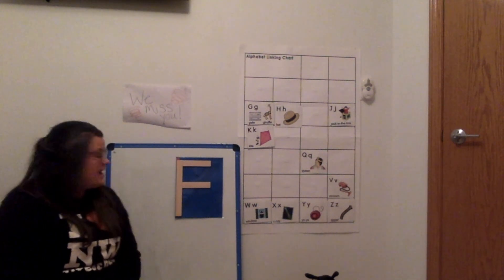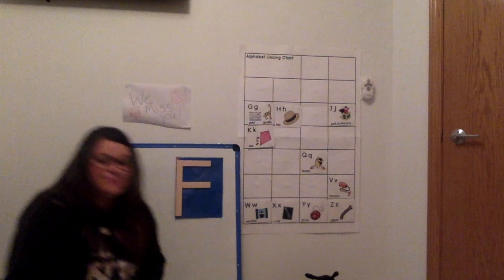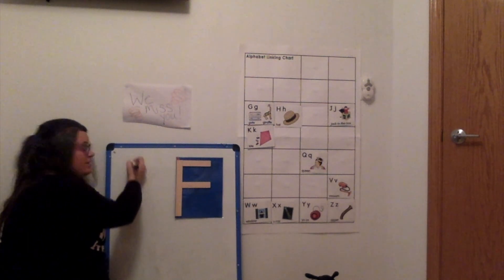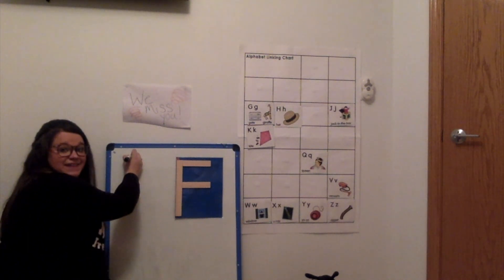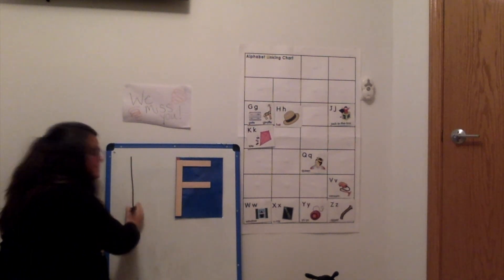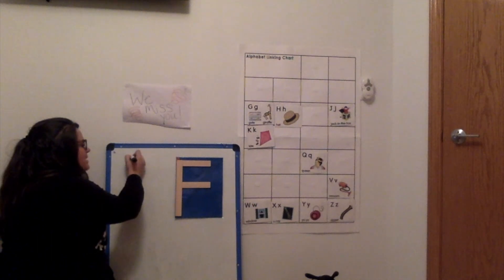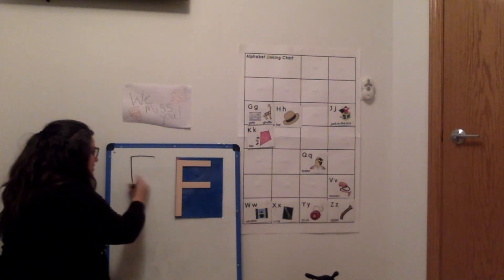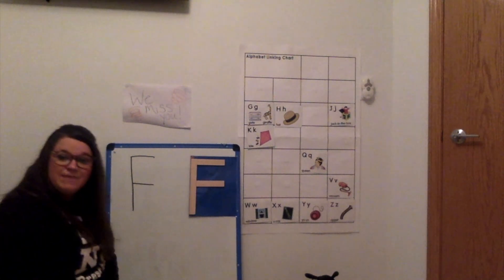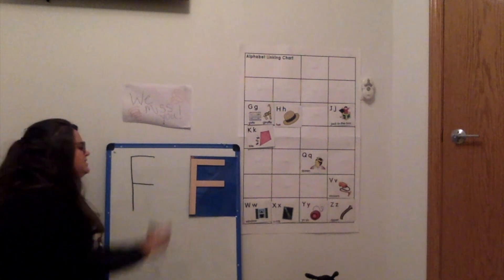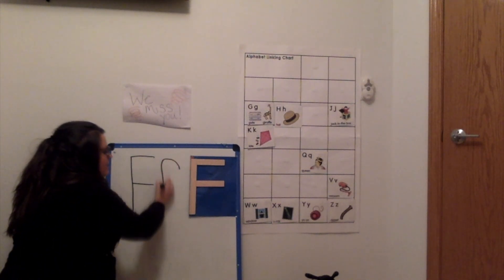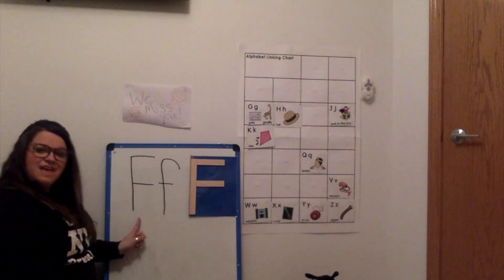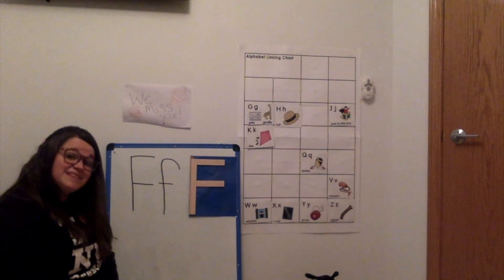Now, when I write the letter F, I take my pencil or my marker. And remember, I start my letter at the top and I'm going to do a big line down — just like this, a straight line. Now, I'm going to froggy jump to the top and make a little line across. Then I'm going to take my pencil and bring it right down to the middle and make another little line across. Now look close — when I make the little F, it looks just a little different. I'm going to make a curve around and a big line down, and then just cross it in the middle. Uppercase F. Lowercase F. That's how I write the letter F.